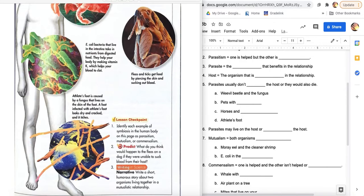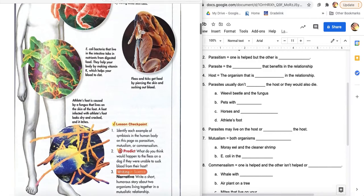The other one down here is athlete's foot. Athlete's foot is caused by a fungus that lives on the skin of the foot. A foot infected with athlete's foot looks dry and cracked and it itches. So parasites live and it's getting the nutrients off you and you're getting itchy, dry looking, cracked skin. That's a harm to you, a benefit to one. That's parasitism.